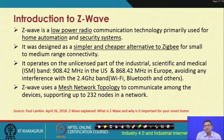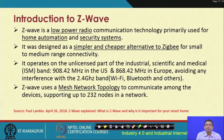Z-Wave uses a mesh network topology to communicate among devices, supporting up to about 232 nodes in a network. For home automation this is quite sufficient, and even for industrial applications, supporting about 232 Z-Wave nodes is good enough.